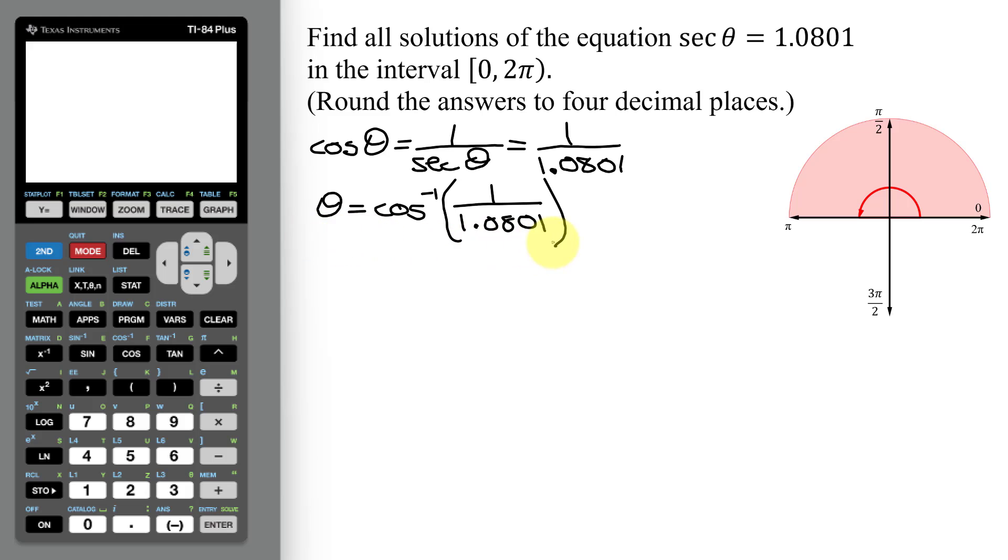Now I can type this in. Inverse cosine function or arc cosine function is in blue above the cosine key. So it's second cosine, notice it opened parentheses for me. Now I just type this in: 1 divided by 1.0801, close parentheses, and hit enter. And this is my answer here.